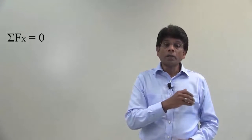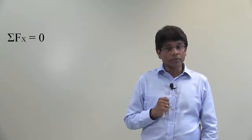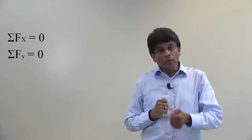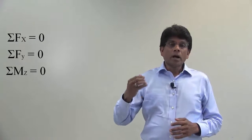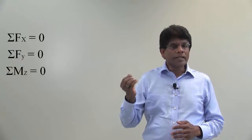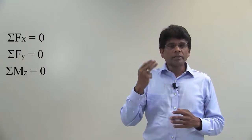In 2D rigid body problems, we will have an additional equation for moment. So we will have sum of all the forces along x-axis equal to zero, sum of all the forces along y-axis equal to zero, sum of all the moment of all the forces about a point equal to zero. These are the three equations.